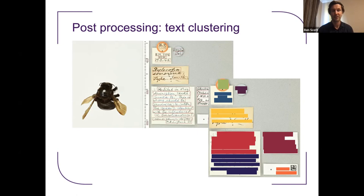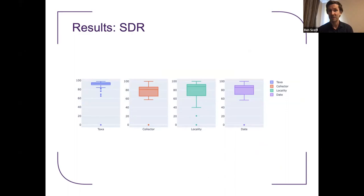Let's look at some results. First I benchmark the SDR — the Specimen Data Refinery. It performs really well. The median taxonomic ratio was 96, so many results are close to a perfect score of 100. Less good on other properties: collector median was 81, locality 87, and date 86, with a much wider spread of accuracy. The outliers at the bottom are where the sequence matcher couldn't find any text that was a good fit — the word was completely lost — but very few of those.